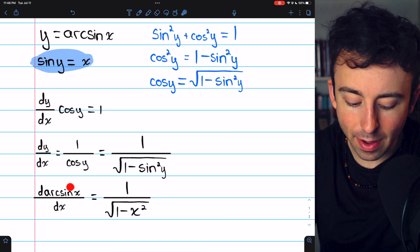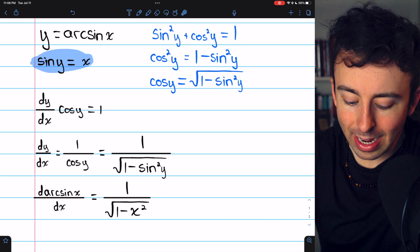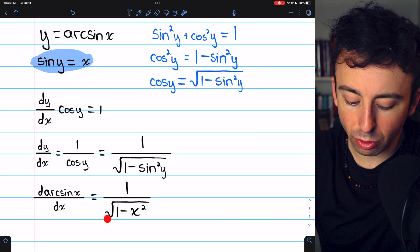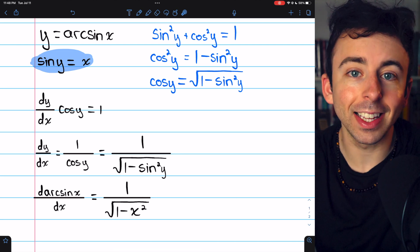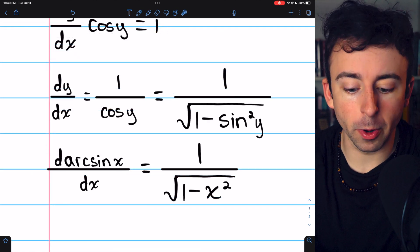The derivative of arcsin(x) with respect to x is 1 divided by the square root of 1 - x². That's a derivative worth remembering.